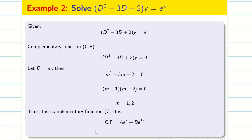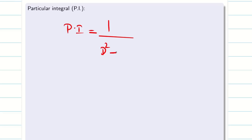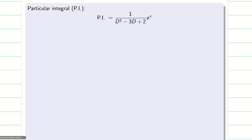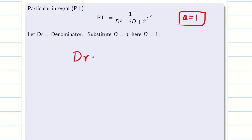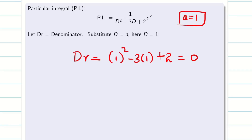Therefore CF = Ae^x + Be^(2x). Now for PI: PI = 1/(D² − 3D + 2) · e^x. Substituting D = 1: DR = 1² − 3(1) + 2 = 0. This time we get zero — unlike Problem 1 where we got 6. Since the denominator is zero, the rule fails.